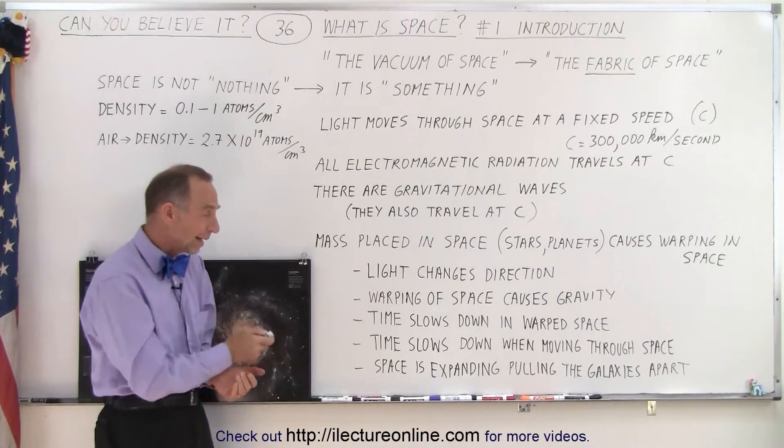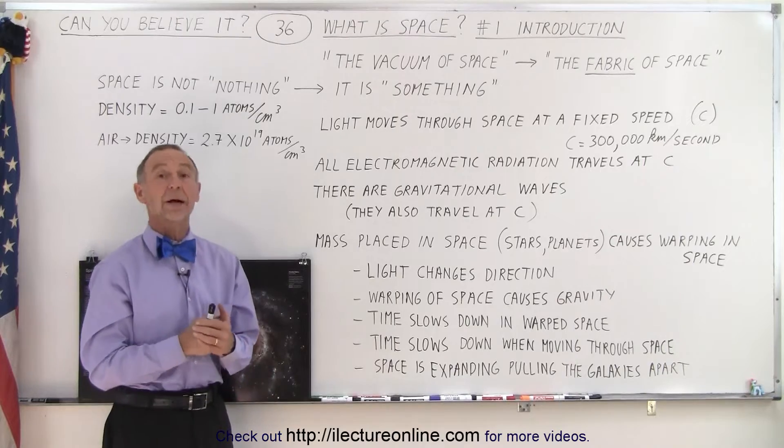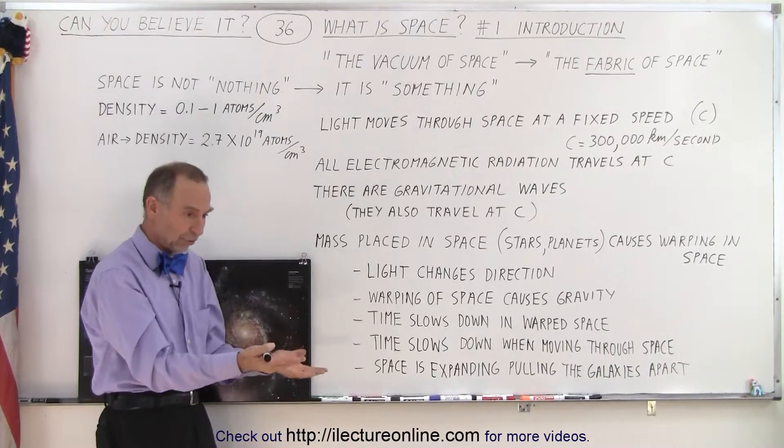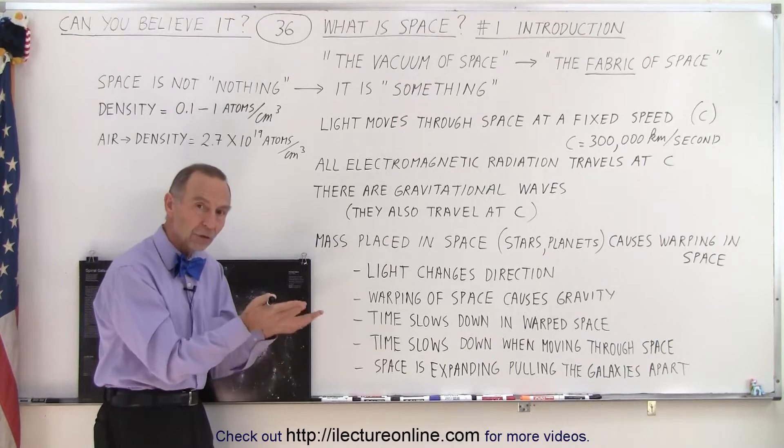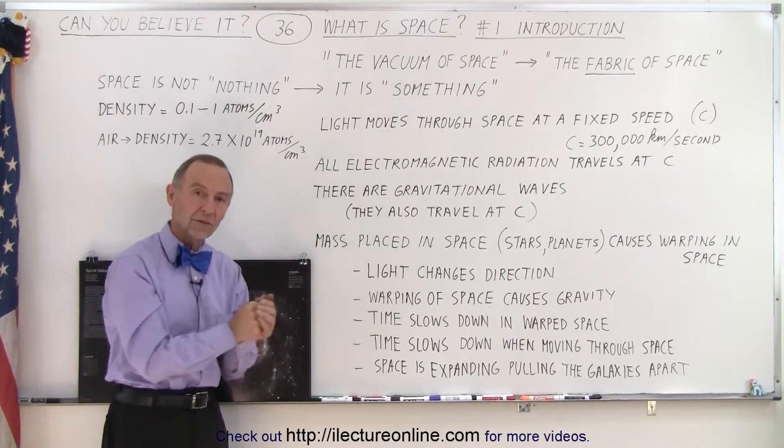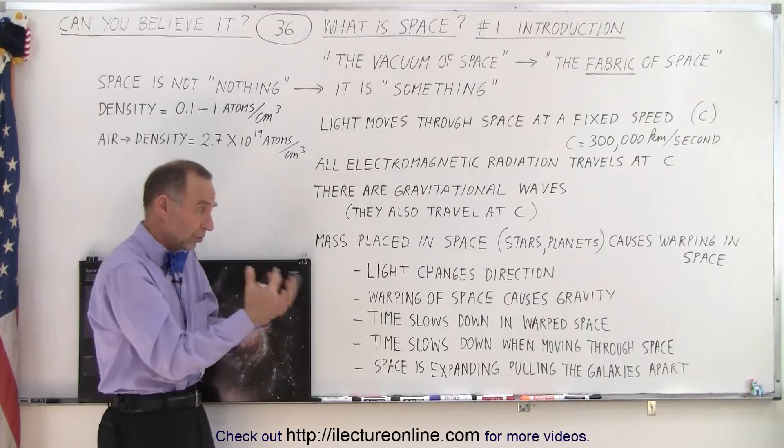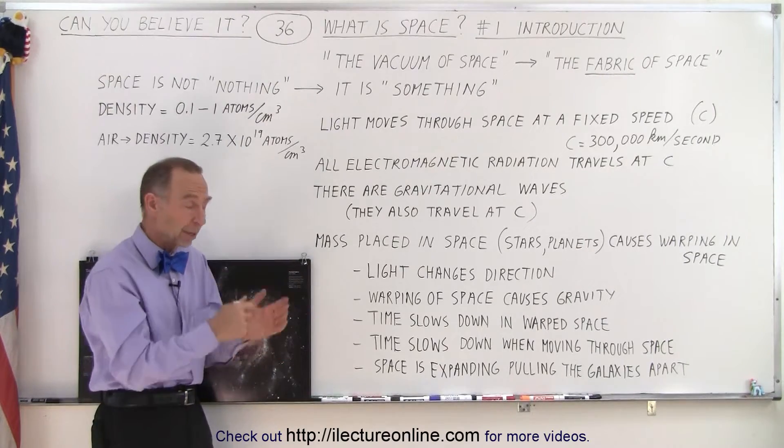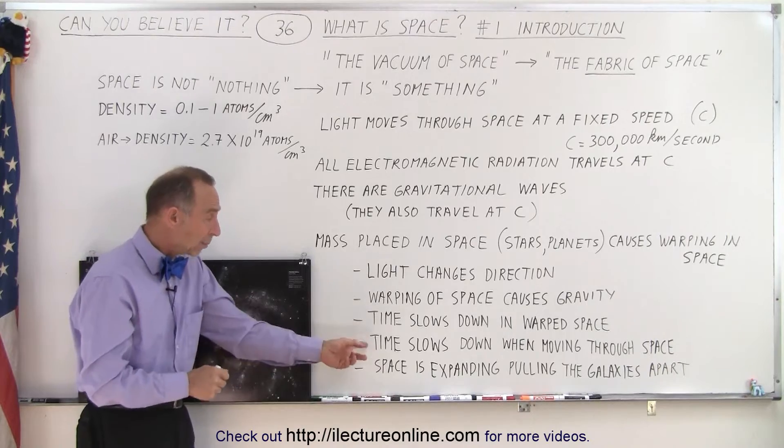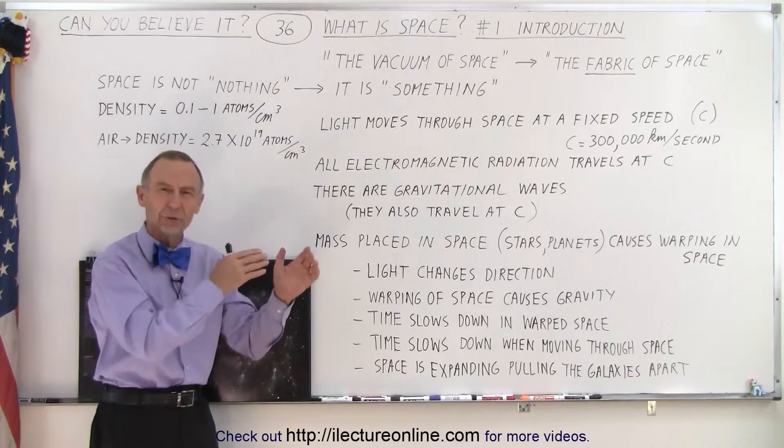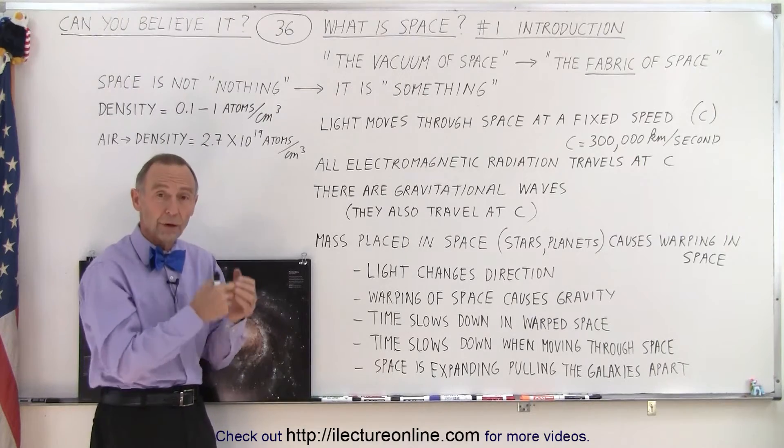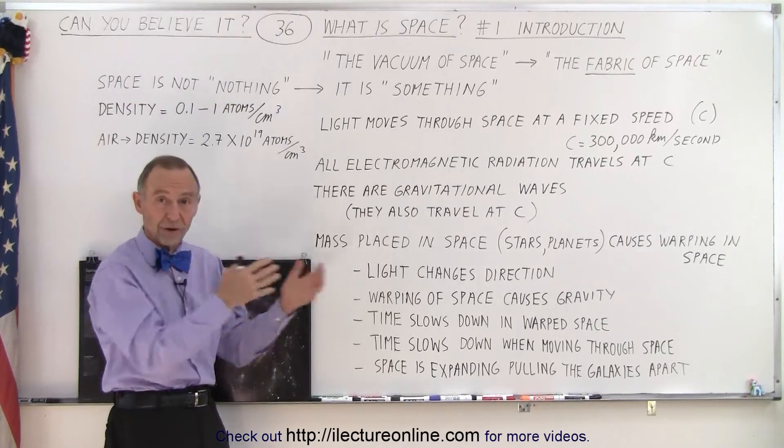We also have measured that time slows down in that warped space. So whenever there's a strong gravitational field, like near the surface of the earth, time is slower there than it is in other places in space. So time does not continue forward at the same rate anywhere in space. It differs depending upon where you are. And time also slows down when you travel through space. The faster you travel, the slower time will go forward for the person or the thing traveling through space.